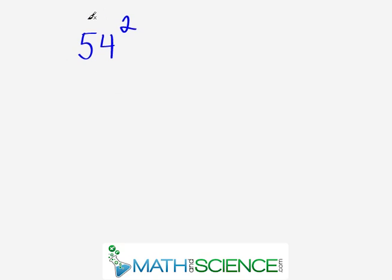What we mean by squaring a number is taking that number and multiplying it by itself. So in this simple example here, 54 times 54.